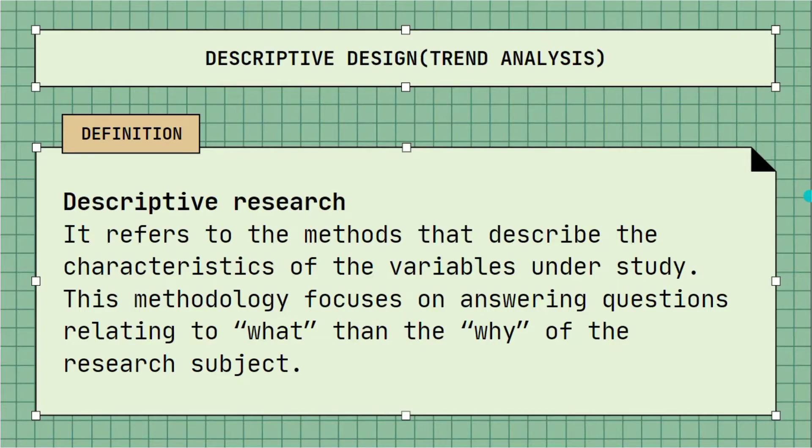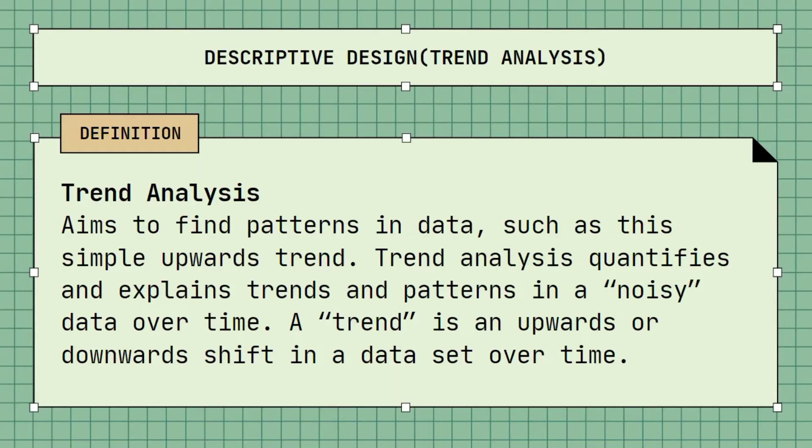We have trend analysis. When we say trend analysis, it aims to find patterns in data, such as this simple upwards trend. Trend analysis quantifies and explains trends and patterns in a noisy data over time. A trend is an upwards and downwards shift in a data set over time.